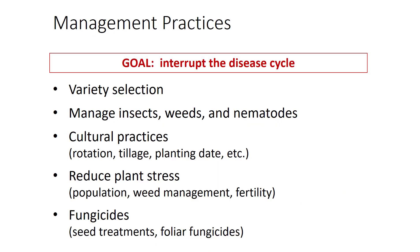Several management practices are used to reduce plant disease, and they are often used in combination. The goal of any practice should be to break the disease cycle. Management practices that are used include variety selection, insect and weed management, cultural practices, good agronomics, and fungicides. We will discuss each of these in more detail over the next several slides.